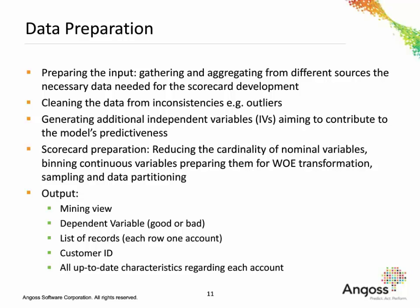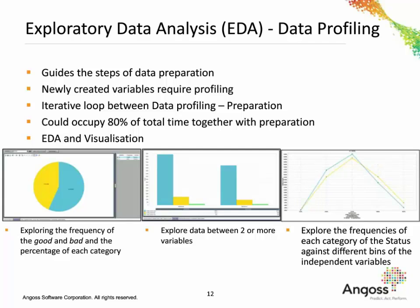The output of the data preparation is known as the mining view or development view, where we have the dependent variable — in most cases good or bad, though sometimes good, bad, and intermediate — and each record represents one customer with all the characteristics of that customer rolled up as columns for that record. Integrated with the step of data preparation, we do what is known as EDA — exploratory data analysis, also known as data profiling. We want to understand the data and understand what transformations I should do to improve the predictiveness of the variables I have, making sure there are no errors, inconsistencies, or outliers that would distort the behavior of the scorecard.